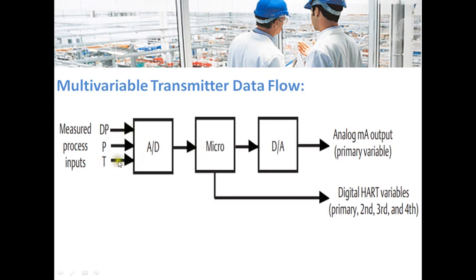Fieldbus devices also support multivariable data flow. Take a DP transmitter, which measures differential pressure, temperature, and static pressure — with 4-20mA, only one variable (the primary variable, i.e., DP pressure) can be transmitted. Whereas with fieldbus, all variables can be transmitted at a time. This is also applicable to a Coriolis flowmeter, which measures multiple physical variables like density, temperature, and mass flow rate — all of which can be transmitted simultaneously using fieldbus.